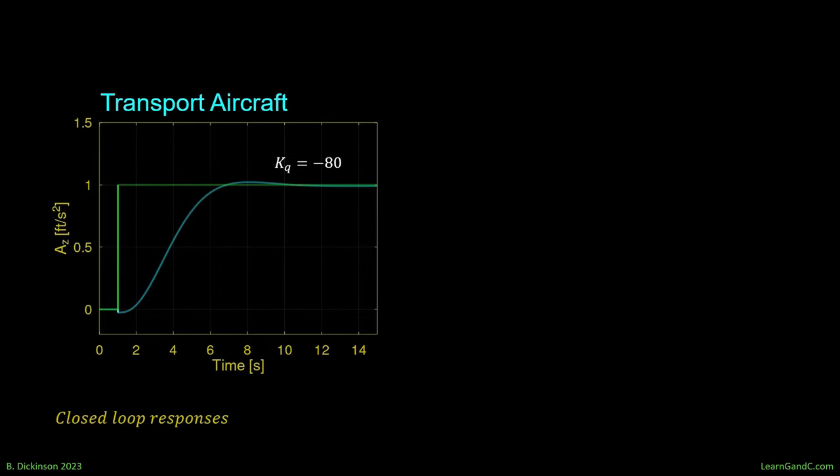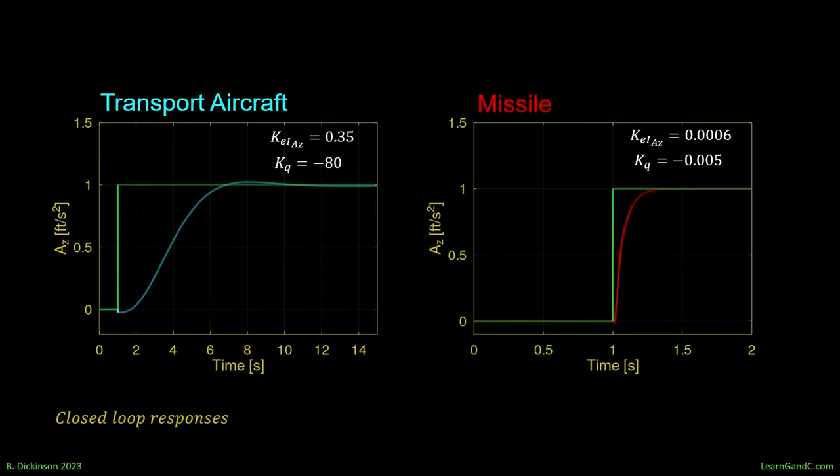So now the closed-loop step response. The transport aircraft, rise time, 63% is 3.2 seconds. The missile, 80 milliseconds. This transport aircraft is not designed to be high-performance. It's designed to cruise. This missile is a high-performance machine. It's designed to accelerate. And so it does. And we see the differences between these two systems. While they both had similar root locus characteristics.